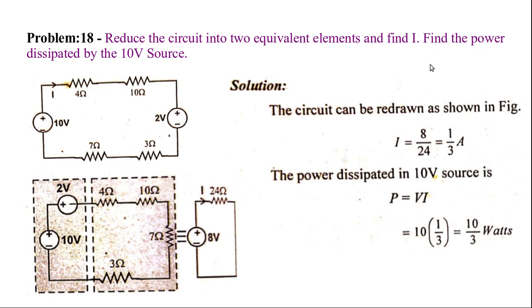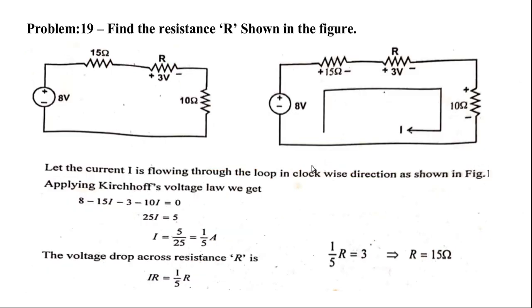Now we have the current. Next, find the power dissipated by the 10-volt source. This is the power dissipated by the 10-volt source.